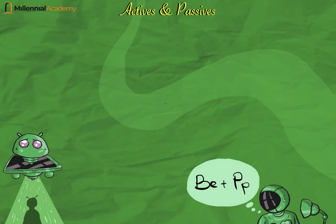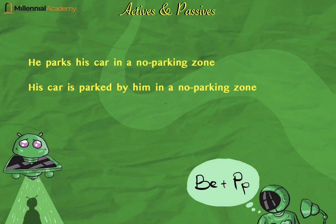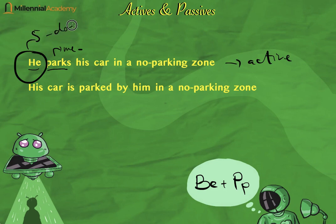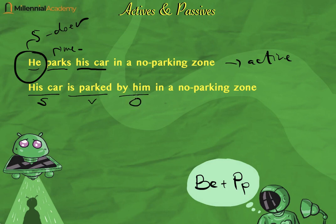Let's look at another example to make it clearer. 'He parks his car in the no parking zone' — dia memarkir mobilnya di area larangan parkir. Notice 'parks' begins with 'me-', so it's active, and the subject 'he' is the doer. If you want to change it to a passive sentence, the object 'his car' becomes the subject: 'His car is parked by him in the no parking zone.' The verb 'is parked' means di-parkir or terparkir — this is passive voice.